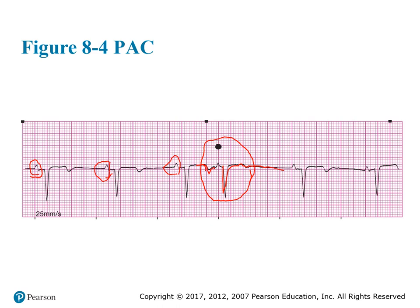Basically, you're looking for a premature beat with a funny-looking P wave — that's your funny-looking P. It doesn't look like the rest of the P waves that are falling into line.